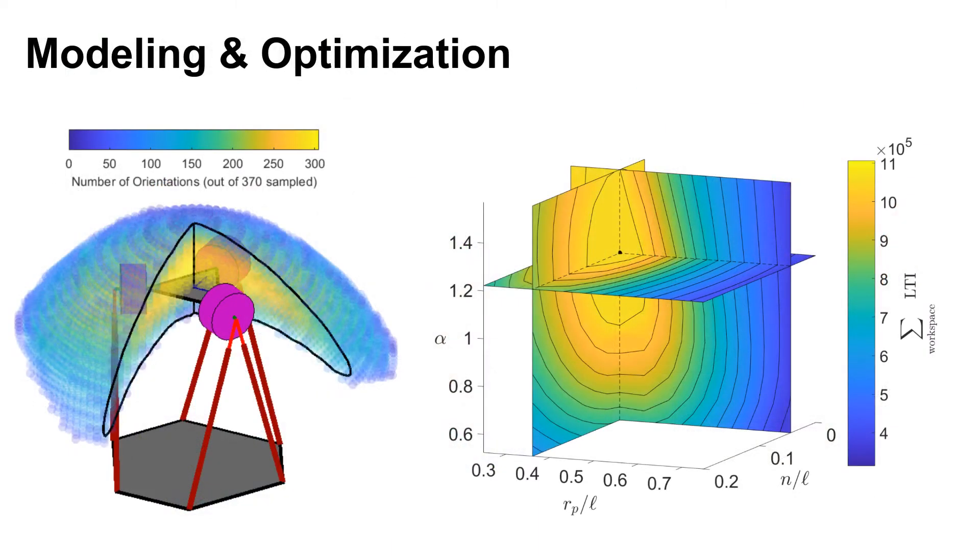We present a modeling framework to predict the feasible workspace of the hand considering both kinematic and frictional constraints. We then explore the design space of the mechanism, identifying an optimal design that achieves a large feasible workspace while also exhibiting a high degree of manipulability, as assessed by the local transmission index.